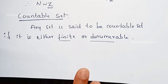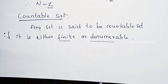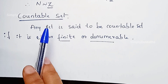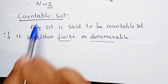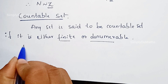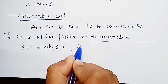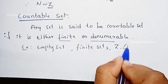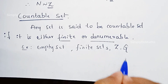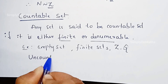By this definition, all finite sets are countable sets, and all sets which are equivalent to the set of natural numbers are denumerable sets, which are also countable sets. So examples of countable sets include: all finite sets, the set of integers, and the set of rational numbers.